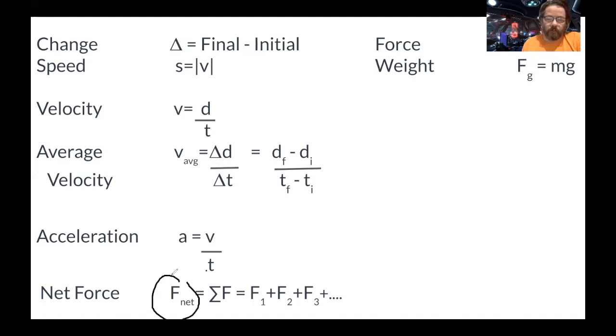Down here we have force net equals, this is the Greek letter sigma, which means sum. Which means we're going to add all the forces together. So force net means we're going to add all the forces together, sum of the forces. That's literally how you read that in math. Sigma F, sum of the forces. So force one plus force two plus force three plus however many forces you have.